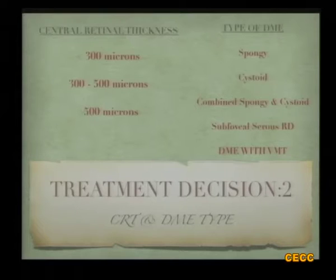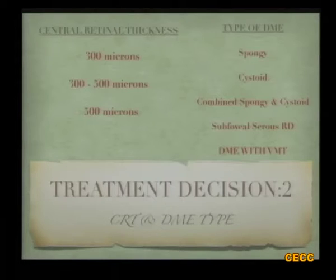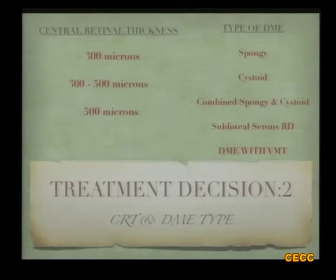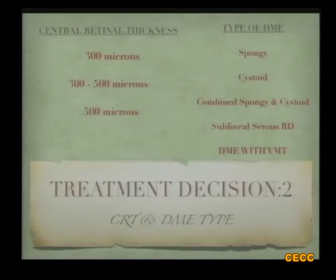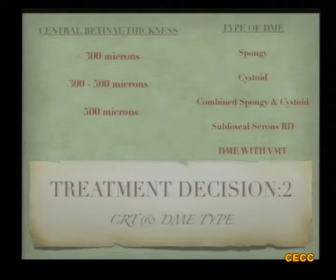We can classify diabetic macular edema into various types based on OCT findings: spongy, cystoid, a combination of spongy and cystoid, subfoveal serous retinal detachment, or the presence of vitreomacular traction. Sometimes the same patient has a combination of all of these, and each aspect has to be dealt with separately.